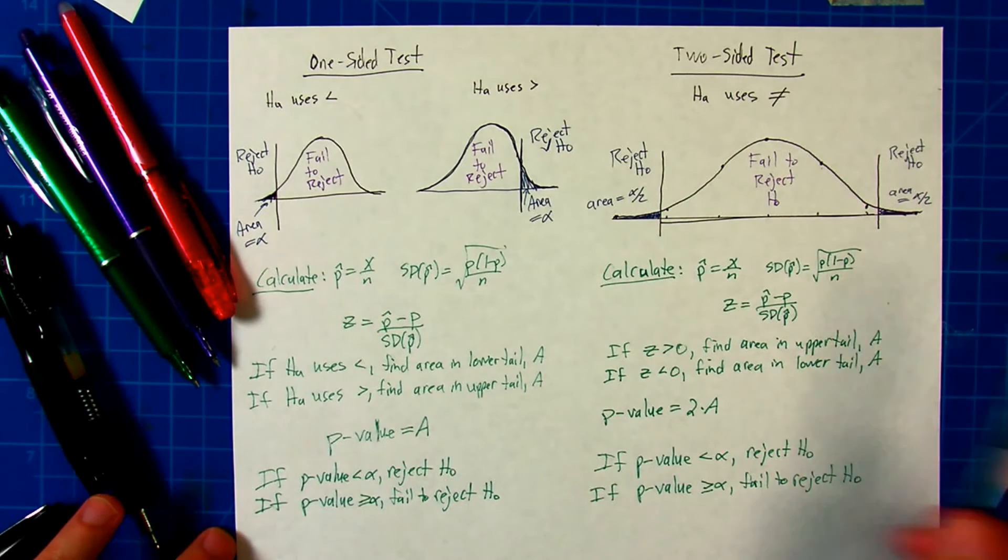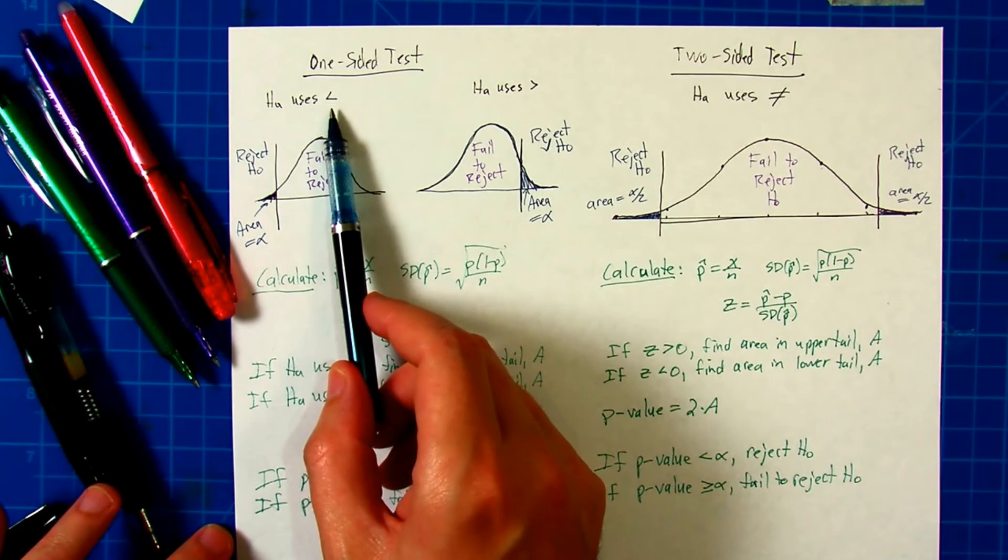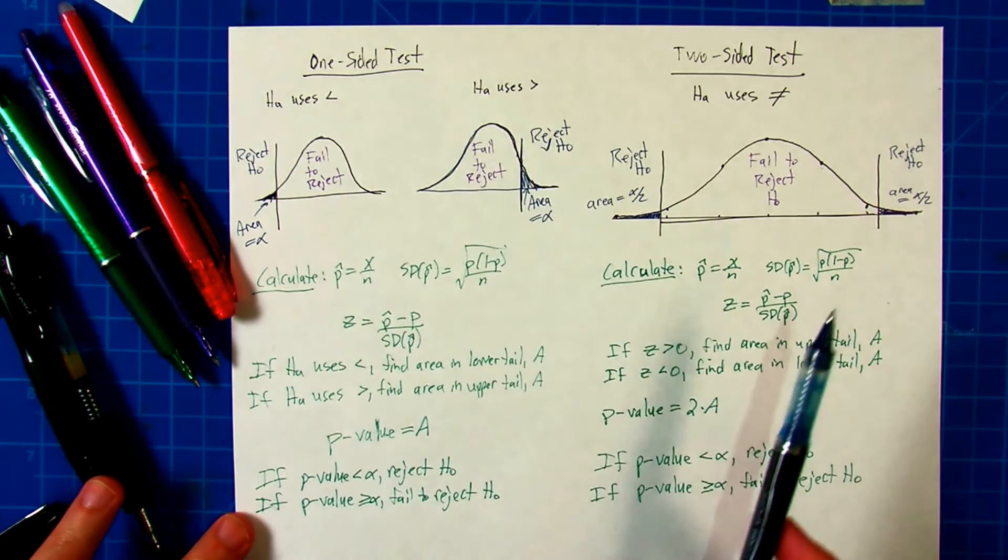A one-sided test can go one of two ways. Either the alternate hypothesis is a less than statement, or it's a greater than statement.